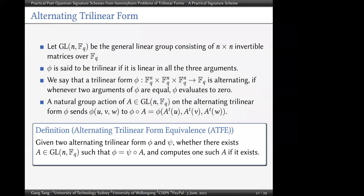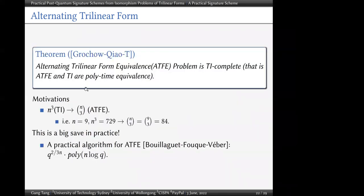The Alternating Trilinear Form Equivalence (ATFE) problem is defined analogously to tensor isomorphism: given two alternating trilinear forms phi and psi, determine whether there exists an invertible matrix A such that A sends psi to phi, and compute one such A if it exists. We have a theorem stating that ATFE is TI-complete — specifically, ATFE and tensor isomorphism are polynomial-time equivalent.